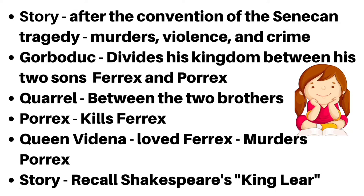Gorboduc is the king of England who, in his lifetime, divides his kingdom between his two sons Ferrex and Porrex. A quarrel arises between the two brothers, and Porrex, the younger, kills Ferrex. The Queen Videna, who loved Ferrex more than Porrex, murders Porrex in revenge.